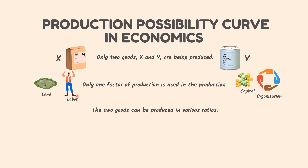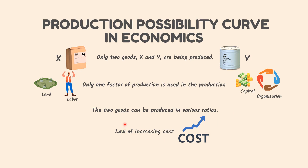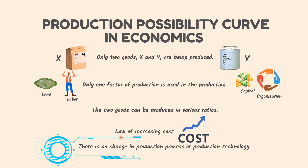Number 3: the two goods can be produced in various ratios. This means that the country can produce more of X and less of Y, or less X and more of Y. Number 4: in the production of both goods, the law of increasing cost operates. This means that if the production of one good rises, its marginal cost will rise. Number 5: there is no change in production process or production technology.